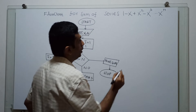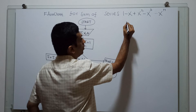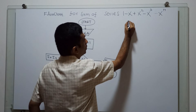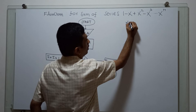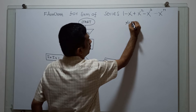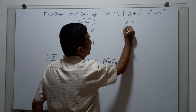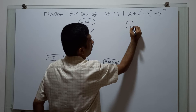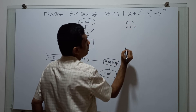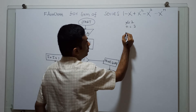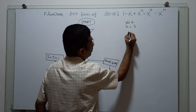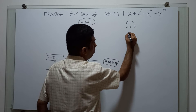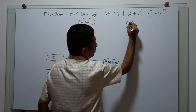For example, I am inputting the value x equal to 2, and n equal to 3. So the series becomes: sum equal to 1, which is x power 0.